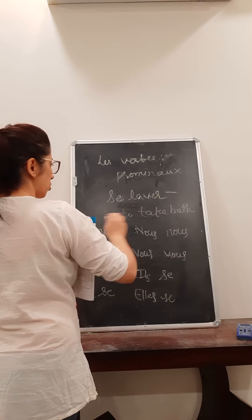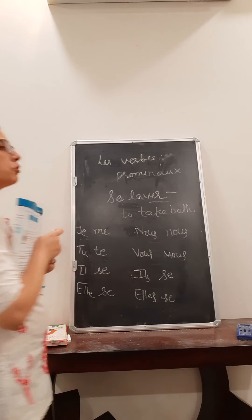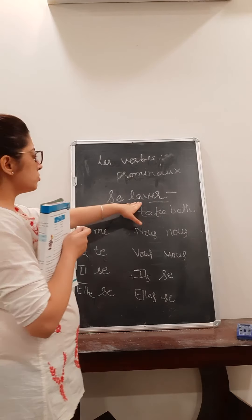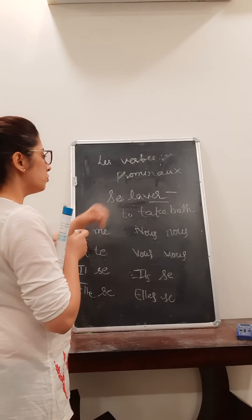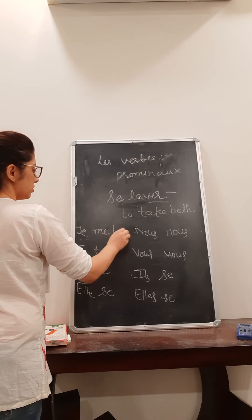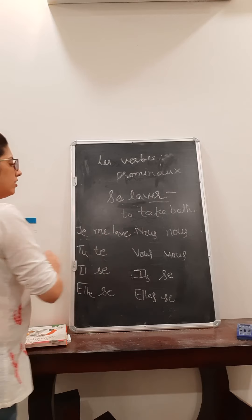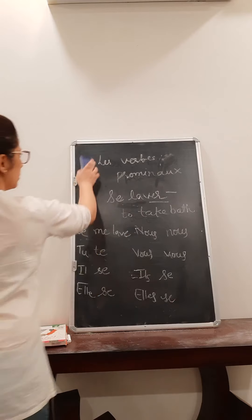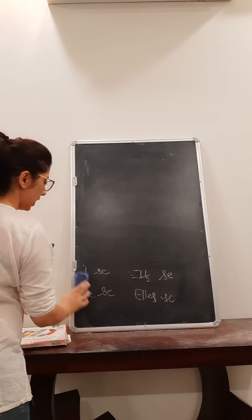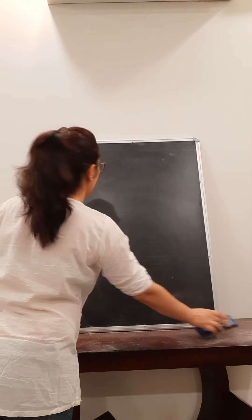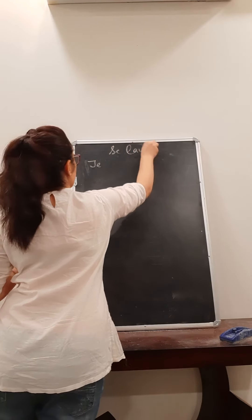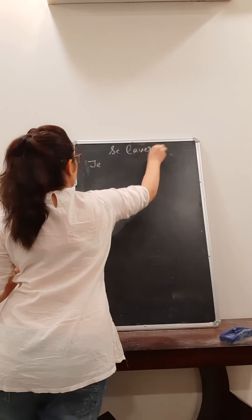Generally these are ER-ending verbs. There are a few exceptions but generally they are all ER-ending. Our verb is 'se laver'. We need to cut the 'r' and write the conjugations. So: 'je me lave'.